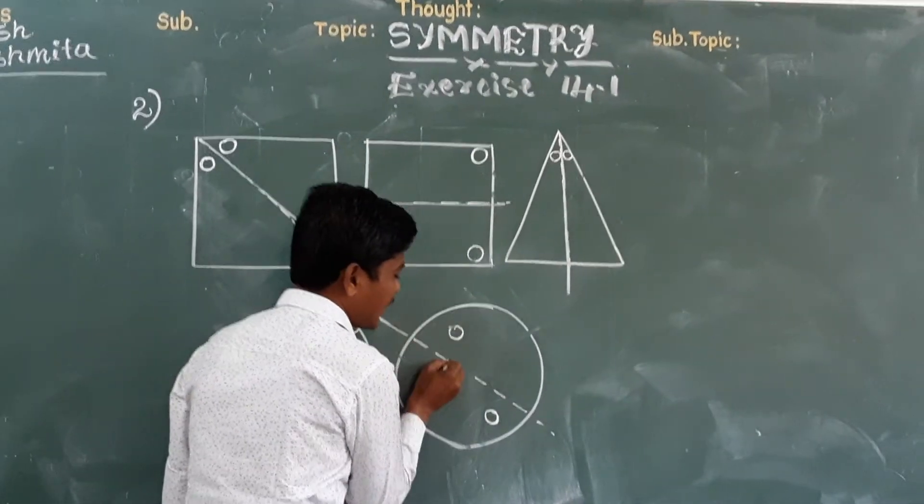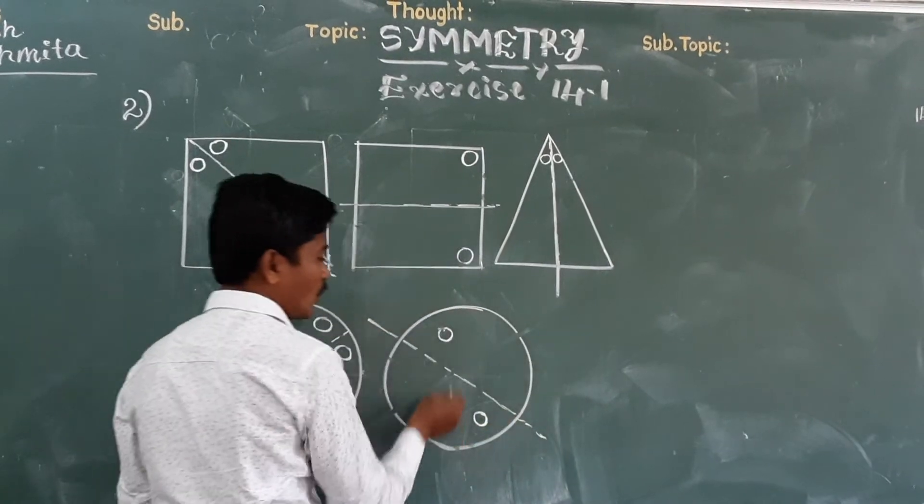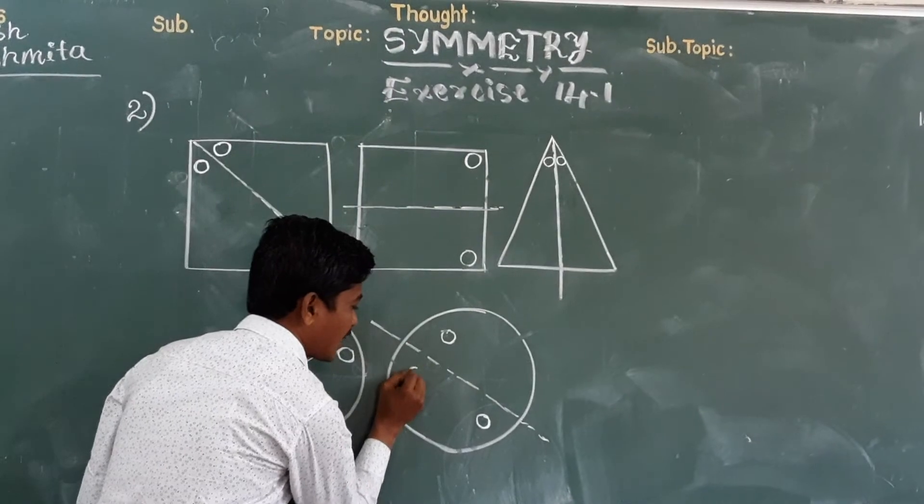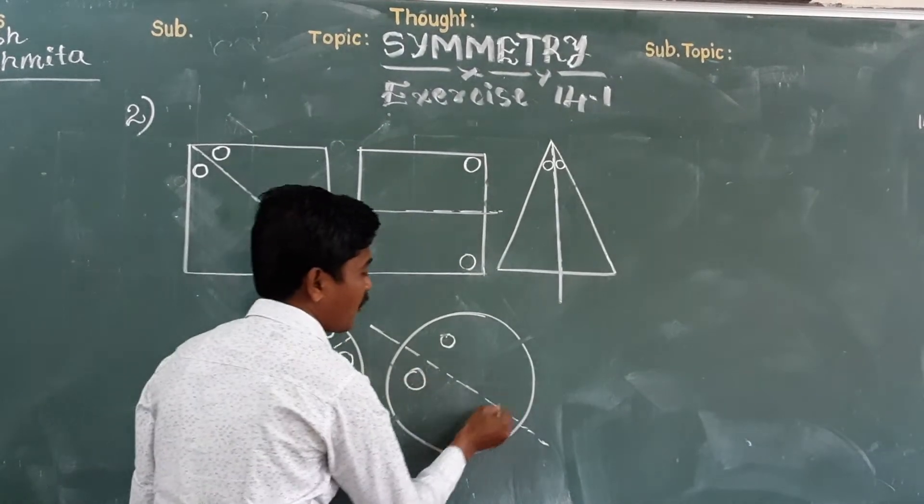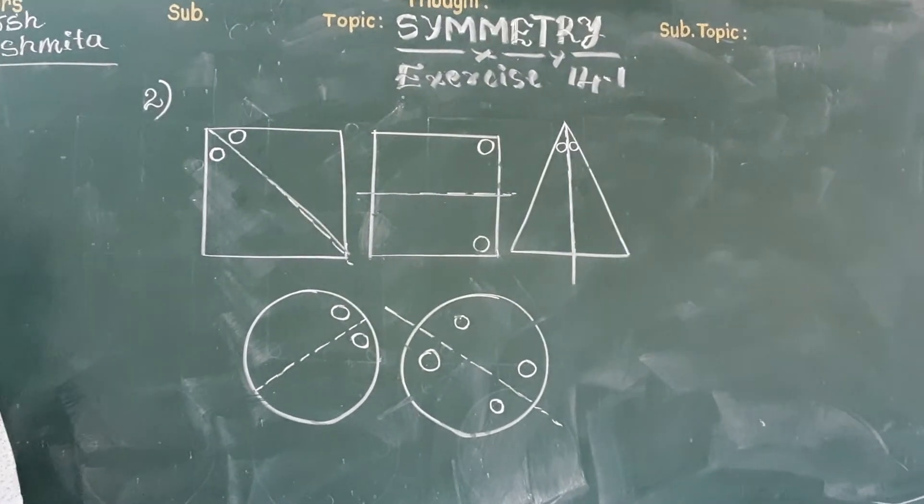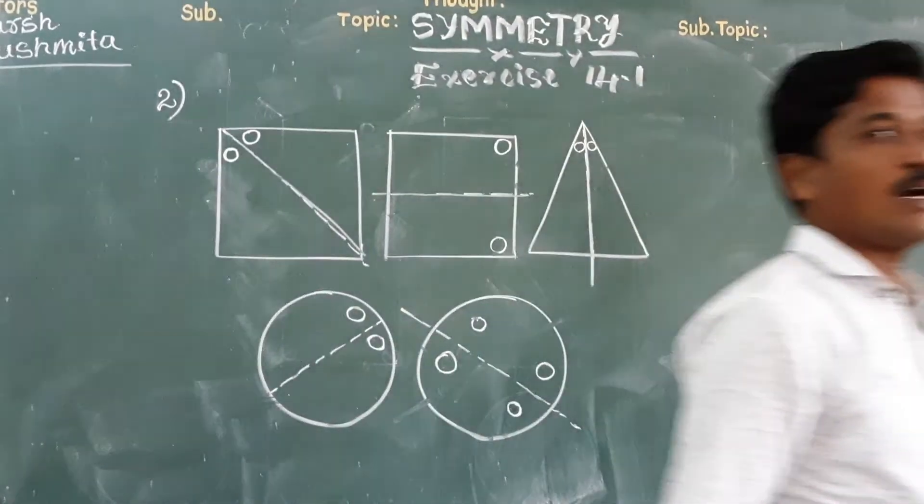But the line of symmetry where he has given is here. So if this is a line of symmetry, it will fall on its opposite side on that line. And this will fall on its opposite side on this line. Is it right? Yes sir.